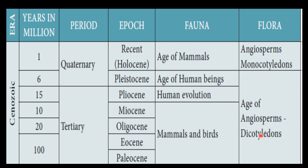Angiosperms — both dicotyledons and monocotyledons — these two groups developed in the flora during this period.